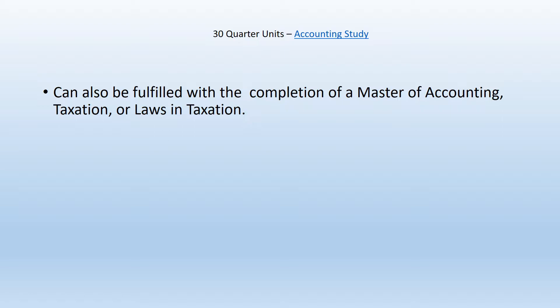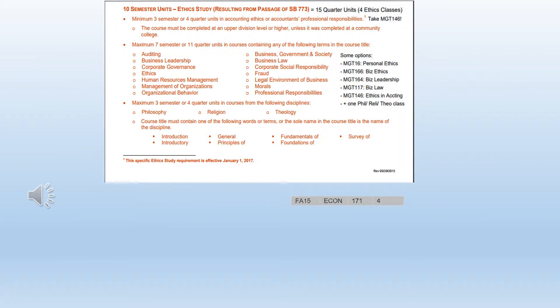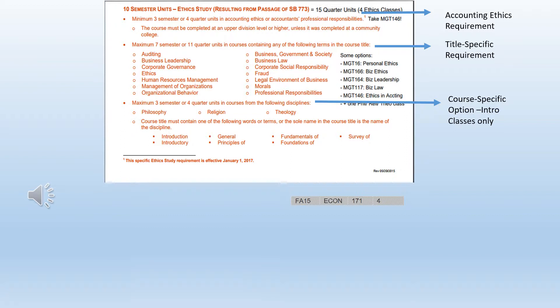Accounting study can also be fulfilled with the completion of a master's of accounting, taxation, or law and taxation. Rady will be releasing a master's of accounting later on, so stay tuned if you want to learn more about that program. Now we've come down to the ethics study section, which requires 15 quarter units or four ethics classes. For the purpose of this video I've split the requirements into three different sections: first the accounting ethics requirement, the title specific requirement, and the course specific option. The idea of breaking it down is to explain it a little better, but that's not the official title that the CBA gives these categories.